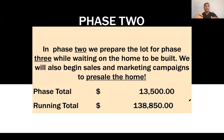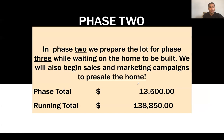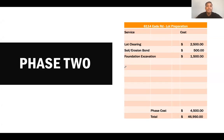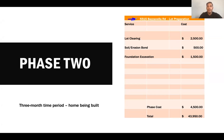Now moving on into phase two. In phase two, we're basically preparing the lots to be ready to be built on. This draw is going to be the smallest amount wired to us when ready. The total in this phase for all three lots is going to be $13,050, which gives us a running total of $138,850. During phase two, we bought a Bobcat and we're going to be clearing the lots, doing the soil and erosion bond, and the foundation excavation.